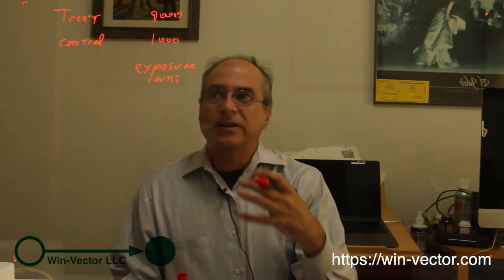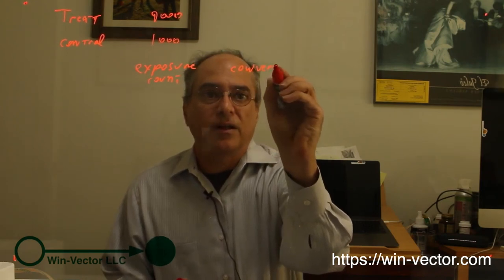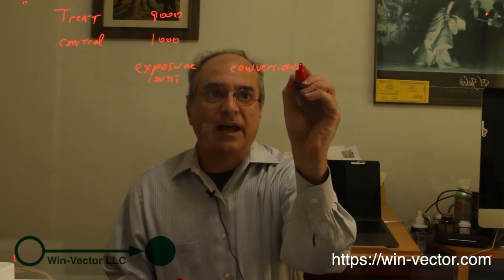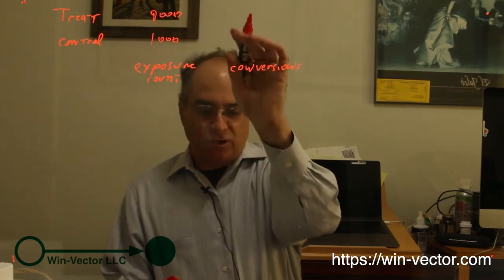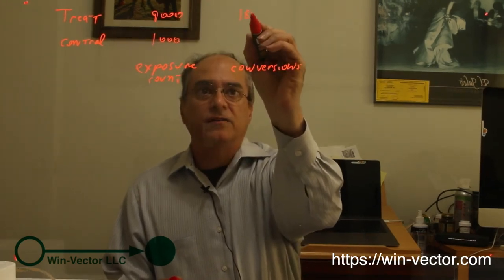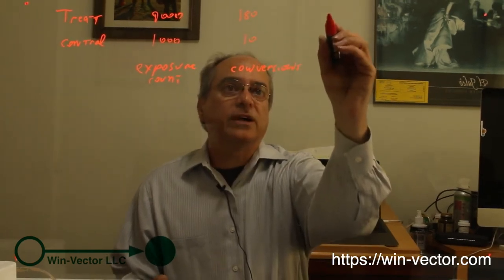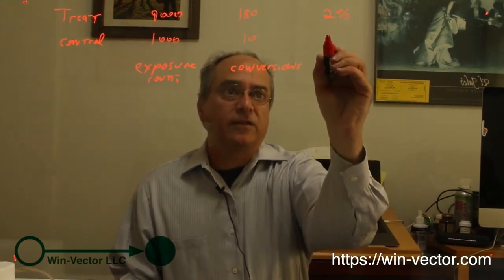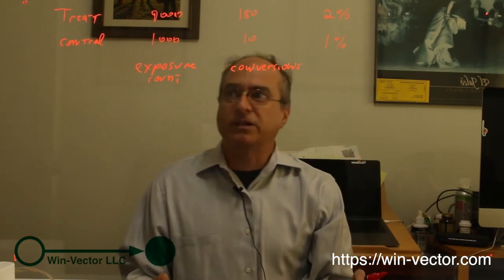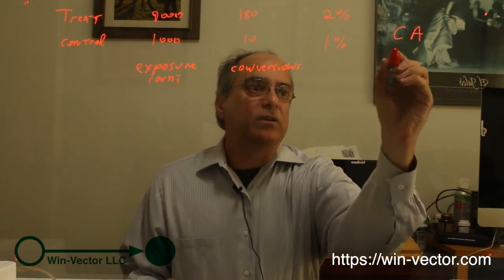What we're hoping to measure is that treatment has more conversions than control. Conversions being the action we're hoping to measure, be it clicking on the ad, buying something, or something like that. The 9,000 treatment exposures lead to 180 conversions, and the 1,000 control exposures lead to 10 conversions. These are easy to work out as rates. This is a 2% response rate, which is astoundingly great. This is a 1% response rate, which is still pretty respectably large.